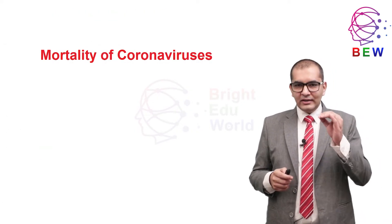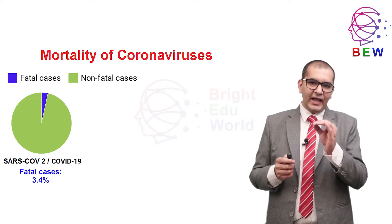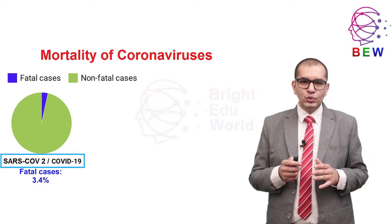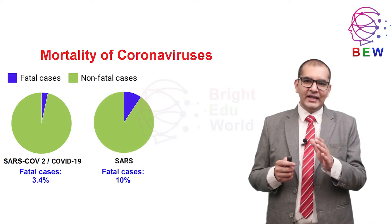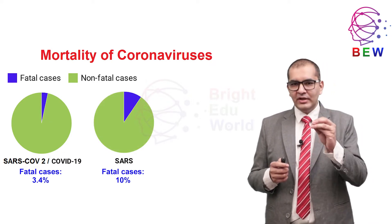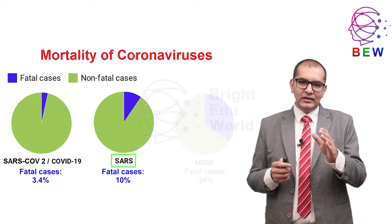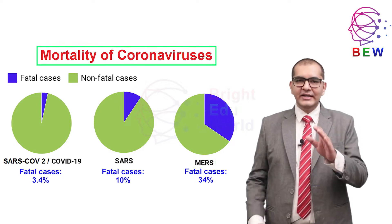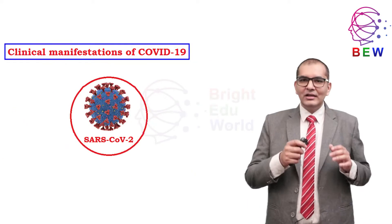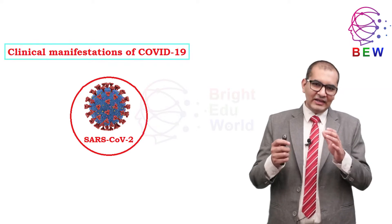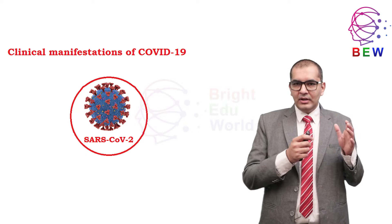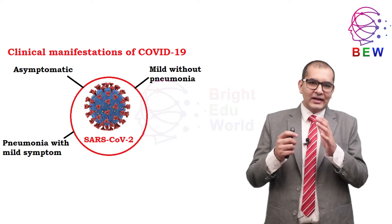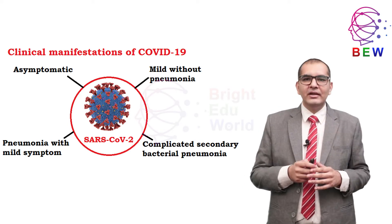Although highly contagious, infection with SARS-CoV-2 seems to be less virulent than SARS and MERS in terms of morbidity and mortality. The clinical manifestations of COVID-19 range from asymptomatic or mild cases to critical illness with rapid deterioration and death.